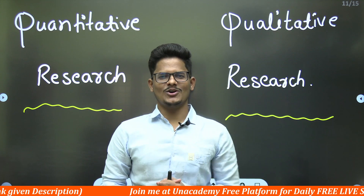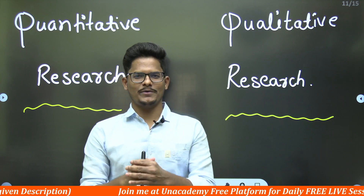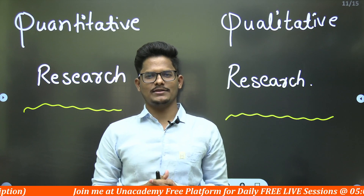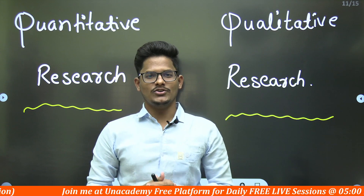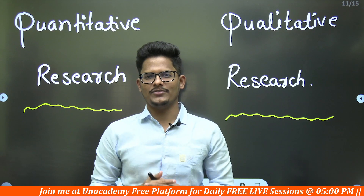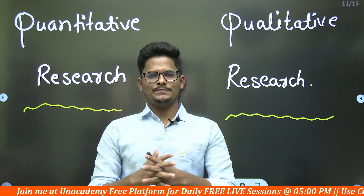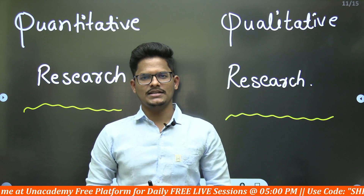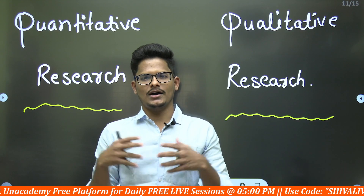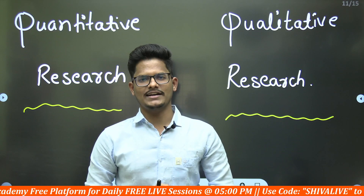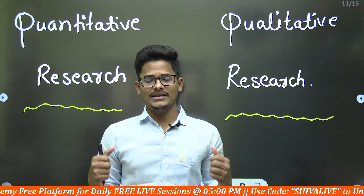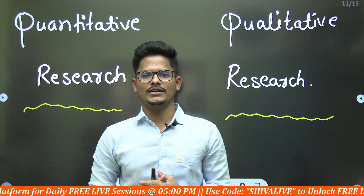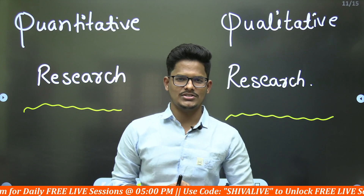Hello guys, welcome to Commercedor. If you are preparing for UGCnet examination, please do subscribe to this channel and press the bell icon. Do not forget to hit the like button and comment if you have any doubts. As part of the UGCnet paper 1 short video series, we have entered into the third type of research — qualitative versus quantitative research — which forms part of the research aptitude unit number 2 in the paper 1 UGCnet examination.